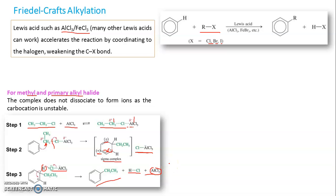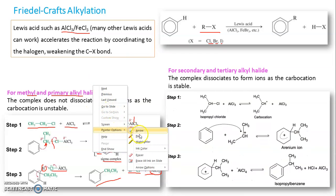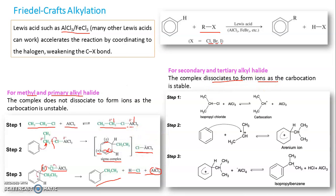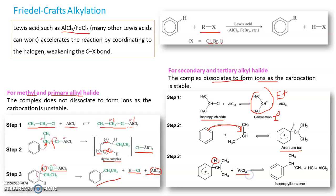For secondary and tertiary alkyl halides, the complex dissociates to form free ions — a free carbocation electrophile. Here the starting material is isopropyl chloride (2° halide), which has sufficient stability as a free carbocation. The pi electron cloud attacks this electrophile, an arenium ion forms, and finally the hydrogen is removed by one of the Cl atoms (as AlCl4⁻), restoring the double bond and giving the product. The only difference from the primary case is how the electrophile is generated.